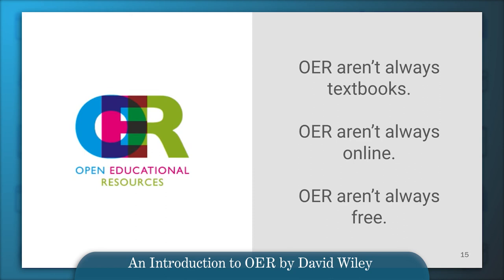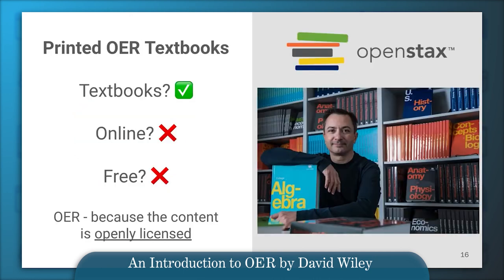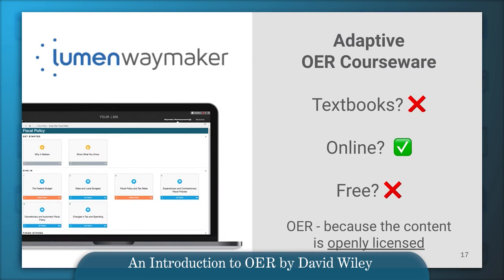If open educational resources aren't always textbooks, aren't always online, and aren't always free, let's look at a couple of examples. OpenStax is a very popular creator of OER textbooks — available both online and in print. These printed textbooks are definitely not free because ink, paper, and shipping cost money, but we would still call them OER because their content is openly licensed. Another example: OER in adaptive courseware — not a textbook, available online, but not free. We would still refer to it as OER because all of the content in the adaptive courseware is openly licensed.